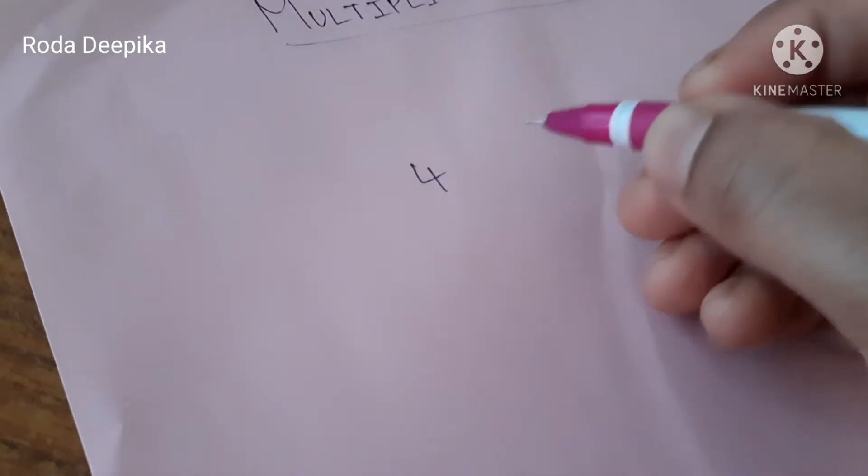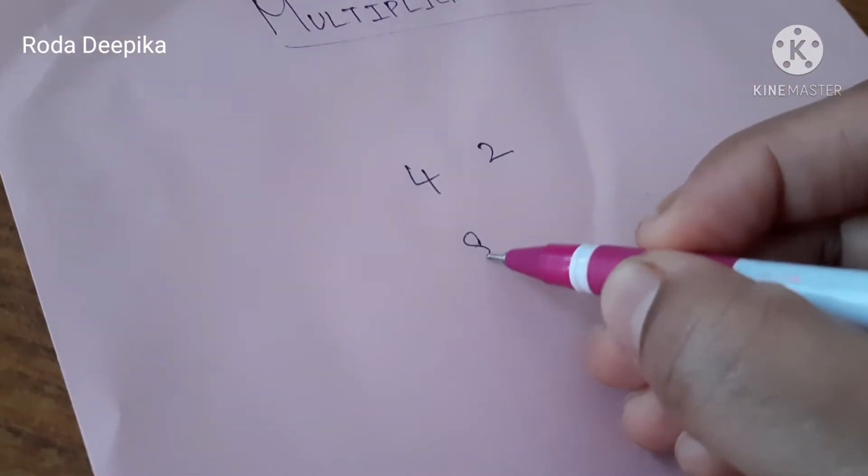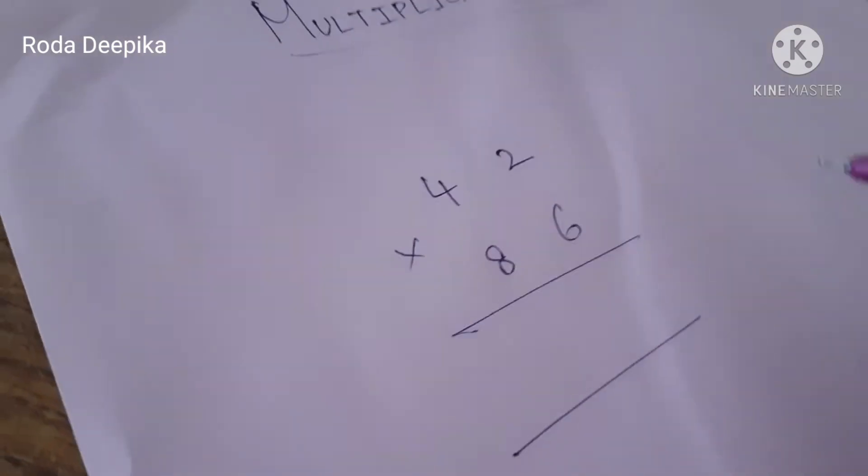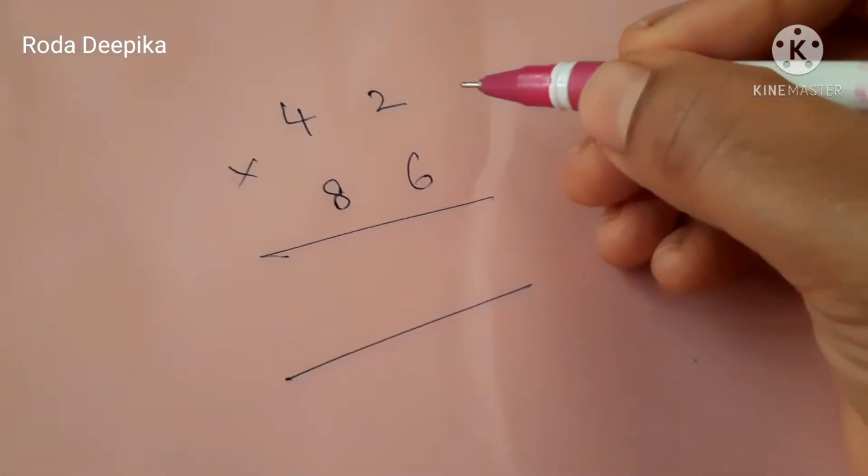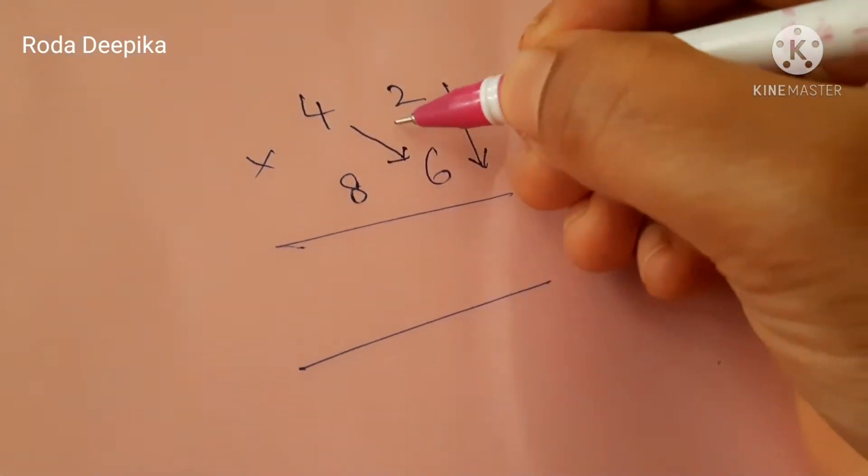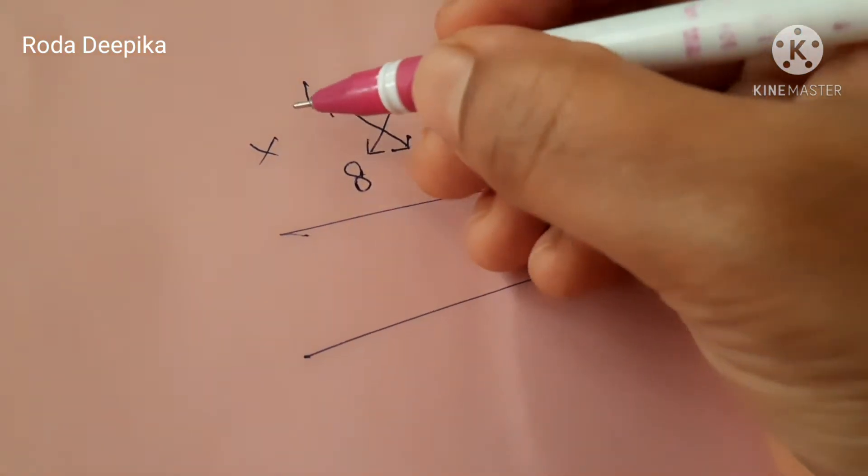Let me take 2 numbers 42 and 86. Let us do multiplication for these 2 numbers. First let me put arrow marks for your easy understanding.